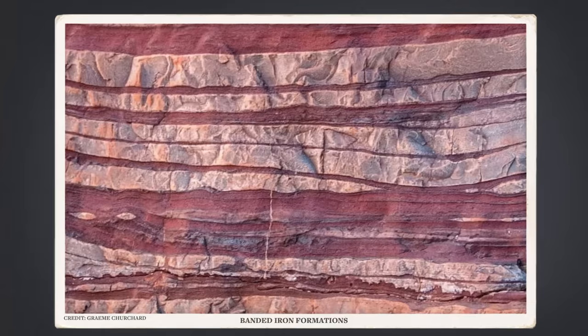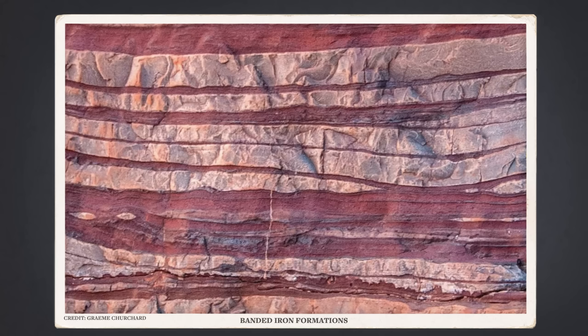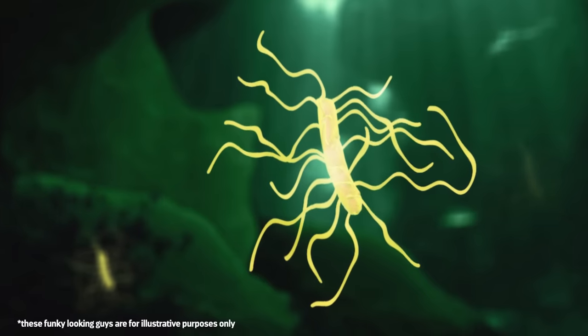In fact, you can still see exactly when and where this happened in strata known as banded iron formations, where huge swaths of rust settled out of the oceans to form layers of red-brown rock. But beyond making the water rusty, rising oxygen levels also shifted the balance of power among living things. Anaerobic microbes started to die off, as they were basically poisoned by the oxygen.